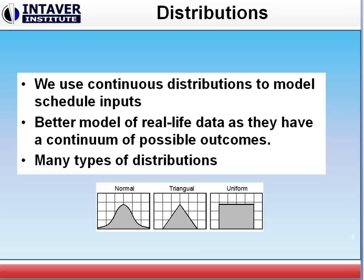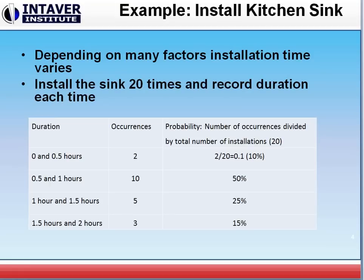Now let's take a look at an example of how we would build a distribution from real life data. If we're going to install a kitchen sink, what we know is that sometimes it will take us a little half an hour. It could take us three hours depending on what occurs during that installation. So we will install it 20 times, and every time we'll record how long it took us to complete the installation.